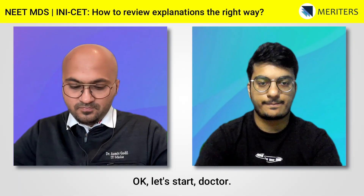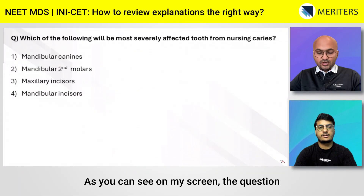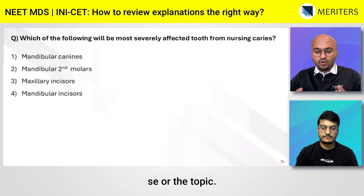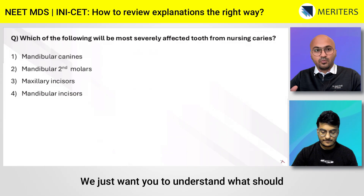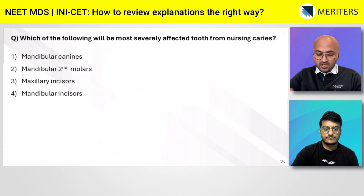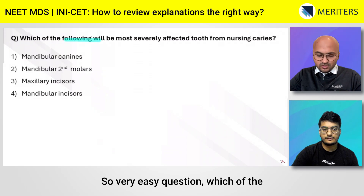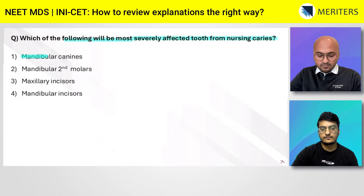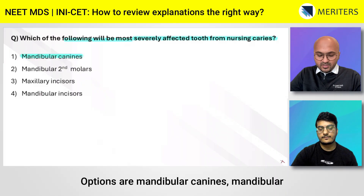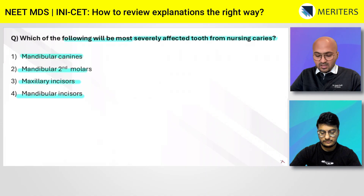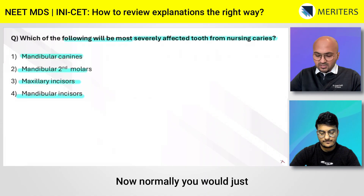Let's start. As you can see on screen, we have a question here. We will not be focusing on the question per se or the topic — we just want you to understand what your strategy should be when reading an explanation. A very easy question: which of the following will be most severely affected in nursing caries? Options are mandibular canines, mandibular second molars, maxillary incisors, and mandibular incisors.